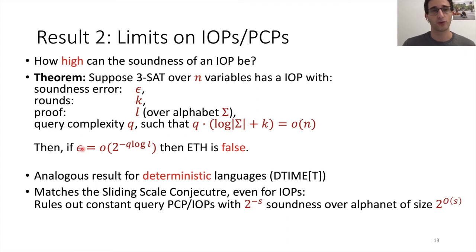Then you cannot have too good, too high soundness. So the soundness error epsilon cannot be smaller than 2^(-q log L). If it is, then ETH is false. And we just mention that we have an analogous result for deterministic languages. If you're interested, you can look at the paper. And this actually matches and generalizes the sliding scale conjecture, even for IOPs. In particular, it rules out constant query PCP or IOPs with 2^(-s) soundness, even if your alphabet has size much larger, polynomial in that, 2^(O(s)).